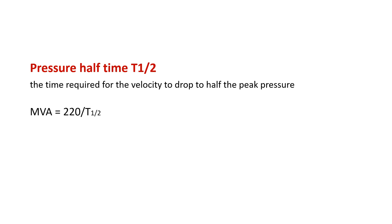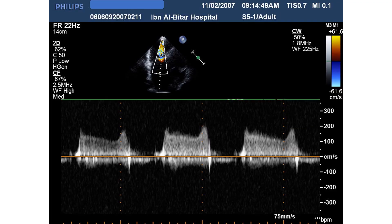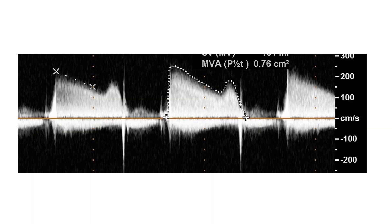Pressure half-time is the time required for velocity to drop to half the peak pressure. Mitral valve area is calculated using the formula 220 divided by the pressure half-time, and this is usually calculated automatically by the device. The Doppler signal used is the same as for measurement of the mitral gradient, and special attention should be paid to the deceleration slope. Here we measure the mean mitral gradient and the mitral valve area by the pressure half-time method, which equals 2.76 centimeters squared.